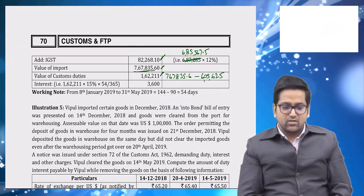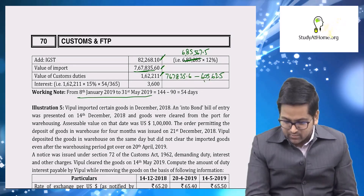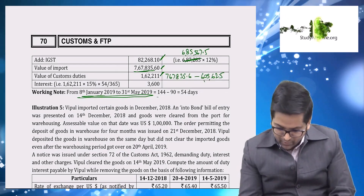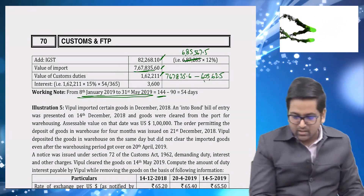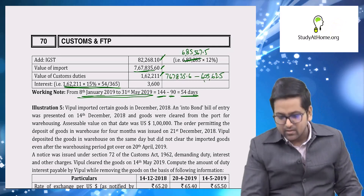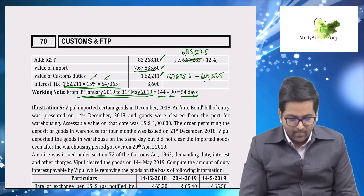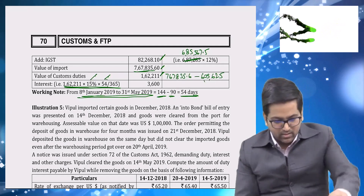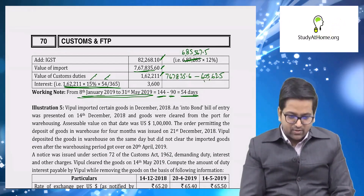Custom duty rounded off is ₹1,62,211. Now calculate interest on this amount. The period runs from 8th January to 31st May, which comes to 144 days. Interest is levied only beyond 90 days, so 144 minus 90 = 54 days. Interest is calculated for 54 days beyond 90 days on the custom duty amount.